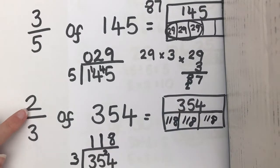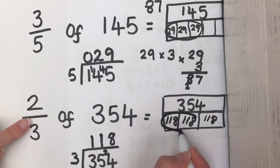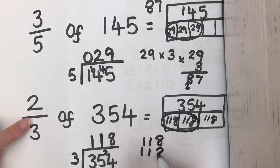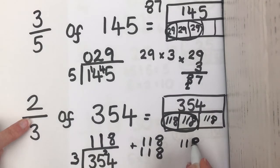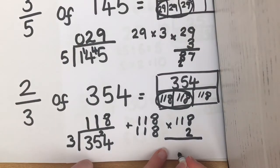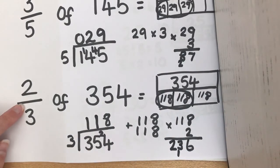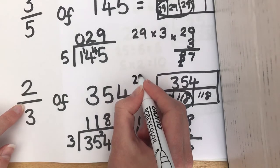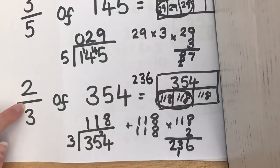If we look back at the fraction, we want 2 of them. So, we can either do repeated addition where we add the two together. Or, we can use short multiplication which is the one I'm going to do. So, 8 times 2 is 16. 2 times 1 is 2. Add 1 is 3. And 2 times 1 is 2. So, 2 thirds of 354 is 236.